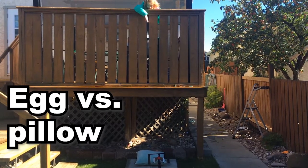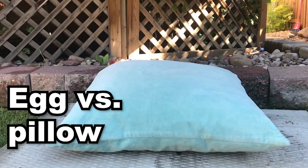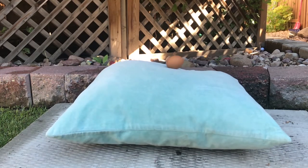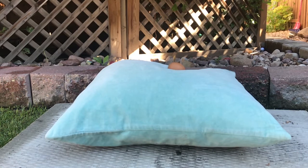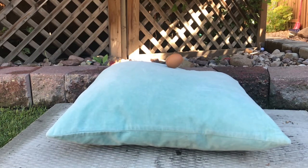When the egg hits the pillow, it doesn't break, which is weird because the egg experiences the same change in momentum or the same impulse. It has the same mass and the same final velocity, so why is the force smaller in this egg?